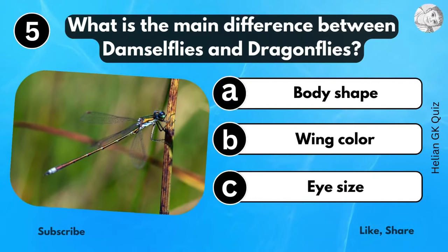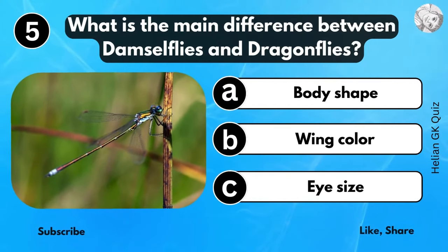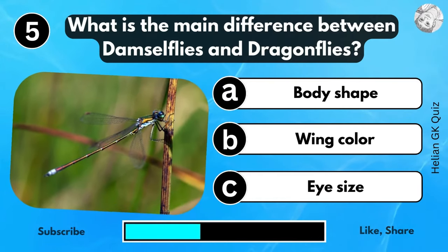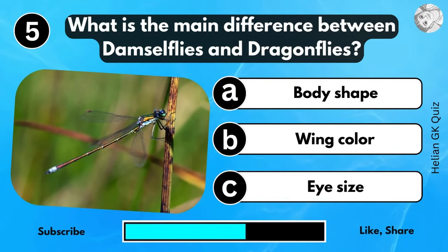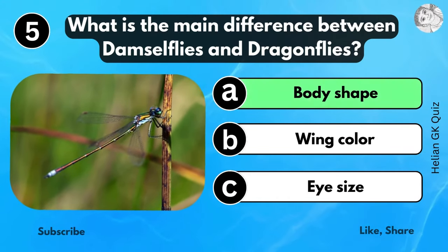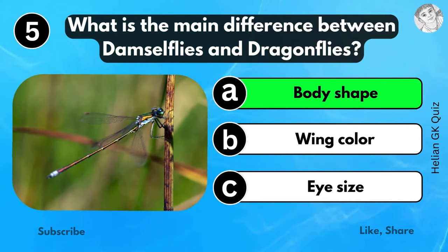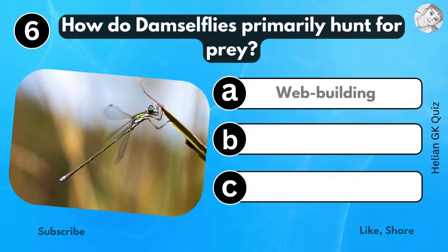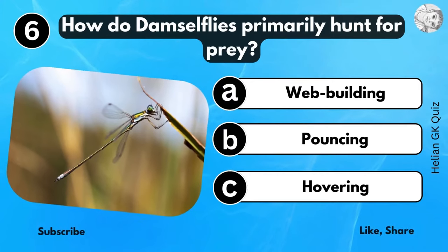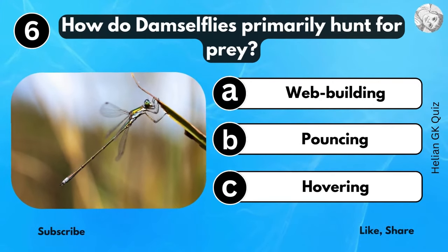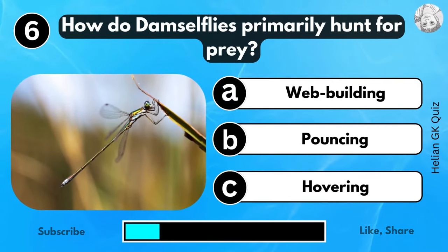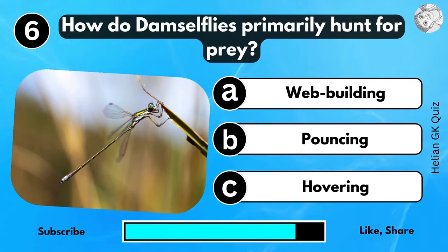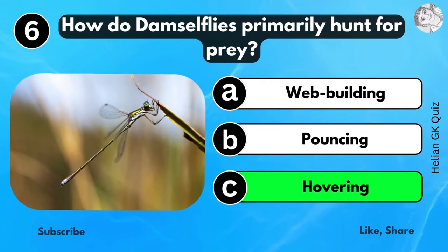What is the main difference between damselflies and dragonflies? Body shape. How do damselflies primarily hunt for prey? Hovering.